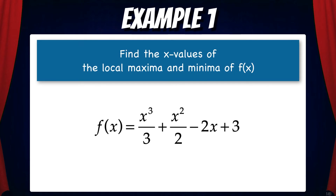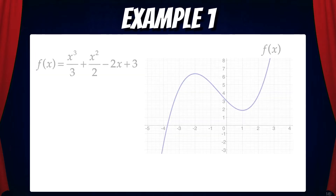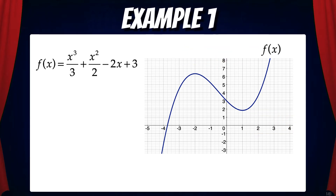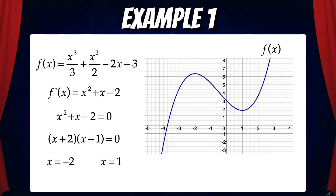Example 1: Find the x values of the local maxima and minima of f, where f equals x cubed over 3 plus x squared over 2 minus 2x plus 3. Here's a graph of f, and we can see that it has a local maximum and a local minimum. To apply the first derivative test, we need to find the first derivative, which is x squared plus x minus 2. Then we'll set this to 0 and solve for x, and we get x equals negative 2 and x equals 1.